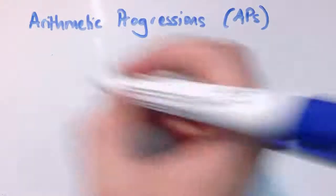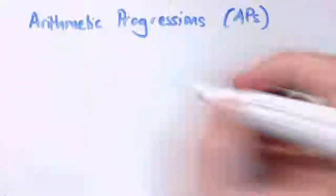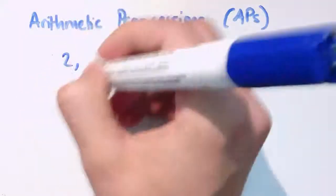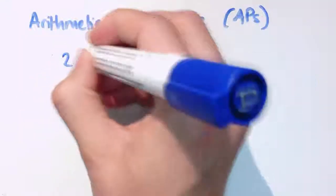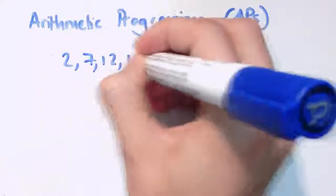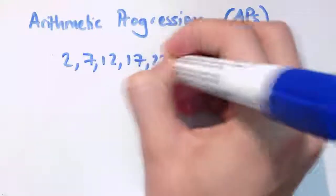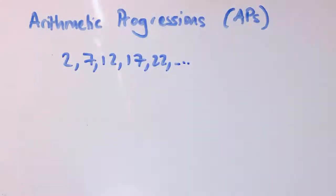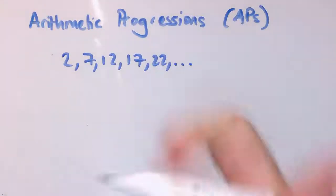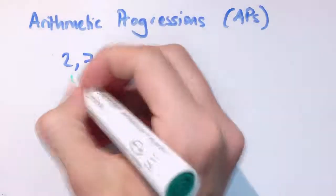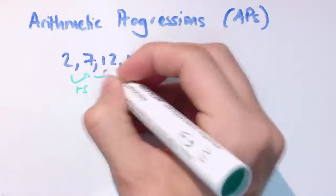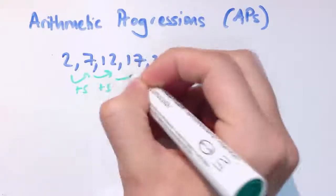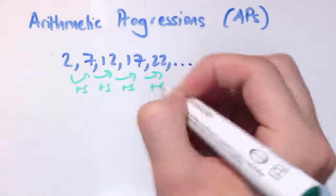You're already familiar with arithmetic progressions. Something like 2, 7, 12, 17, 22 is an arithmetic progression, because it starts at 2 and from one term to the next it just adds on 5 — plus 5, plus 5, plus 5, plus 5, etc.